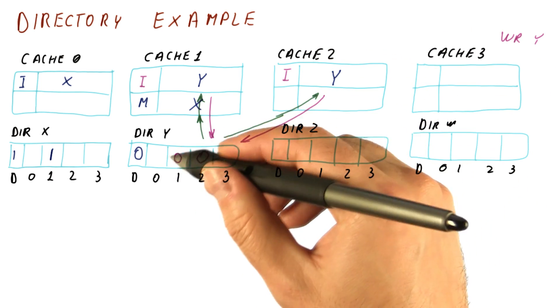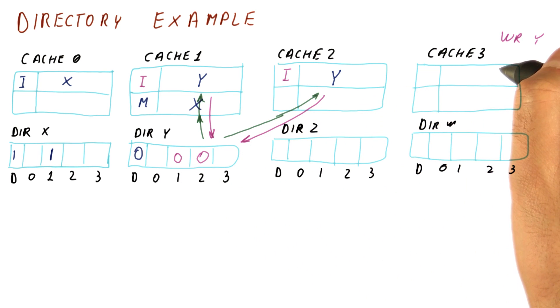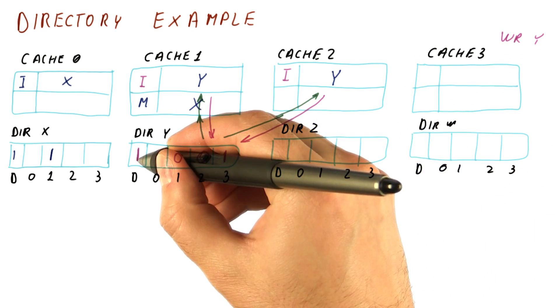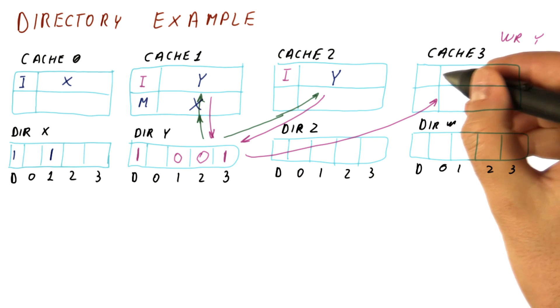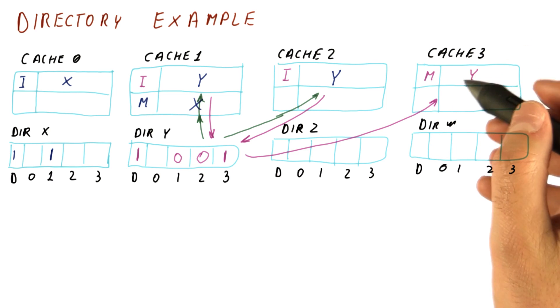Now that we know there are no more remaining sharers, we can send the data to the requesting writer and note that it's going to have the block and that the block will be dirty. So now we send the block over here and this block becomes modified here and so on.